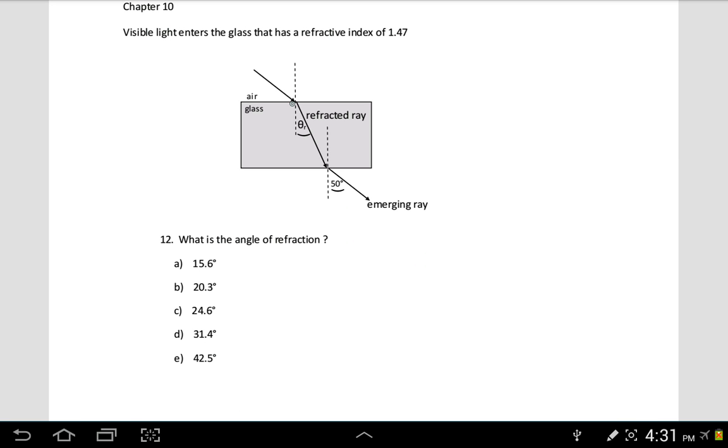Chapter 10 says that light incidents from the air, enters the glass block, and leaves at 50 degrees. The question asks what is the angle of refraction. We're looking for this angle.